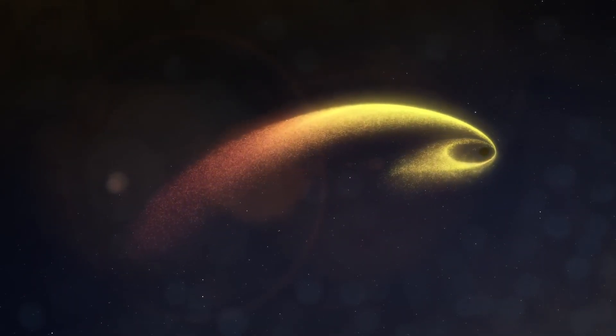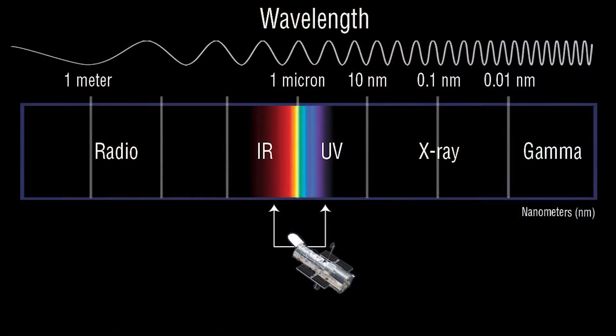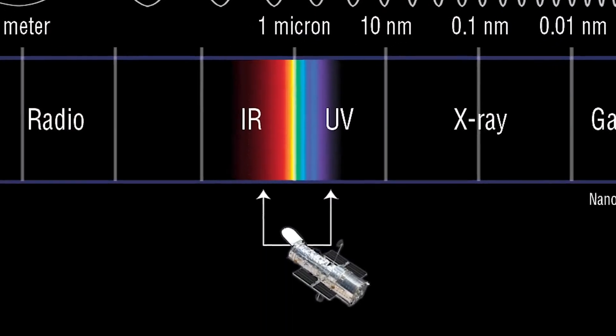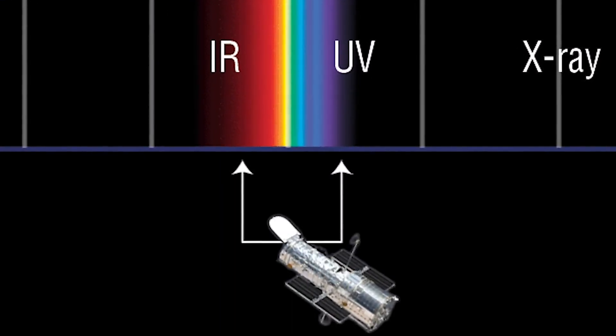The shredded star is nearly 300 million light-years away, but astronomers used Hubble's powerful ultraviolet sensitivity to analyze its light to gather forensic clues of the violent event.